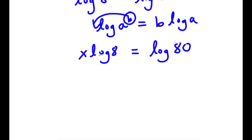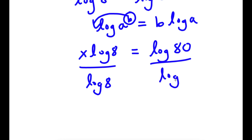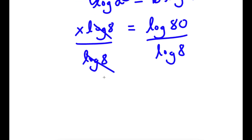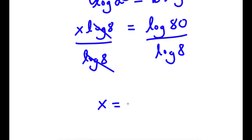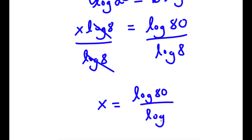So now we want to isolate x, so I'm going to go ahead and divide both sides by log 8, so I can move log 8 to the right-hand side. So now on my left-hand side, these two are going to cancel out, and now I have x is equal to log 80 over log 8.